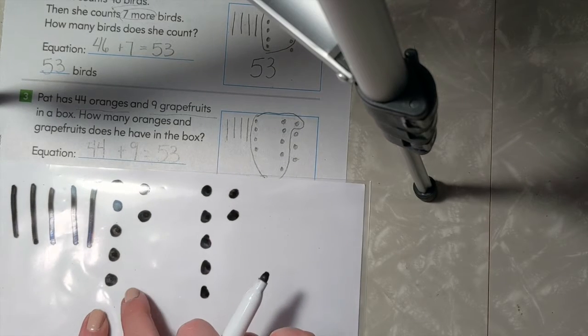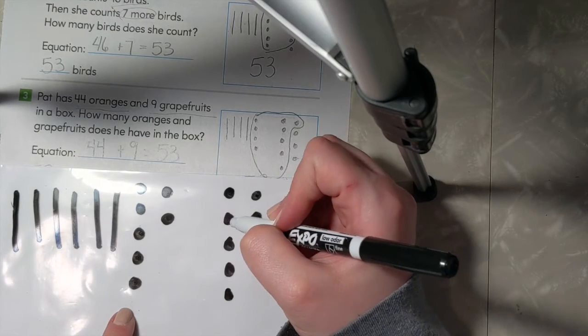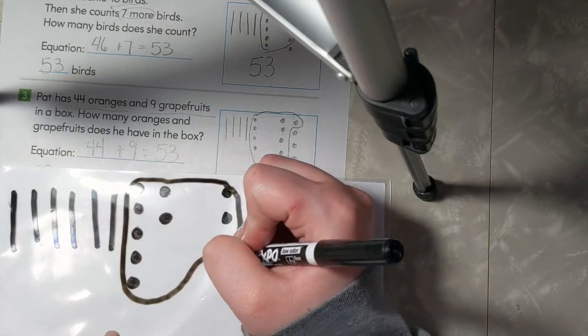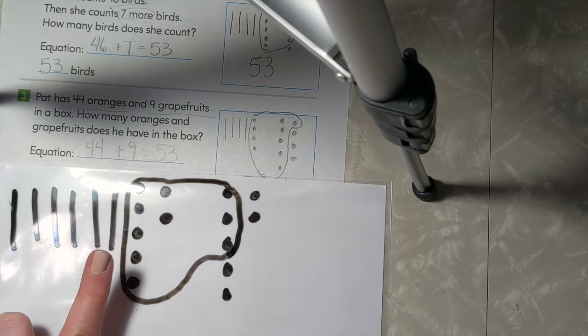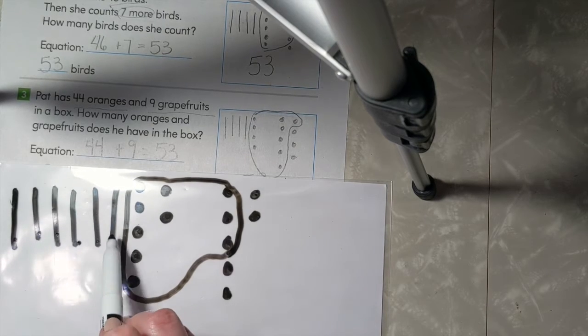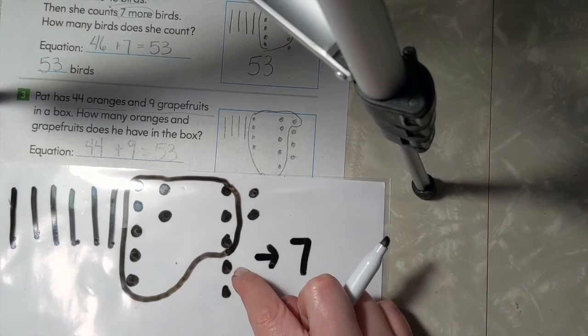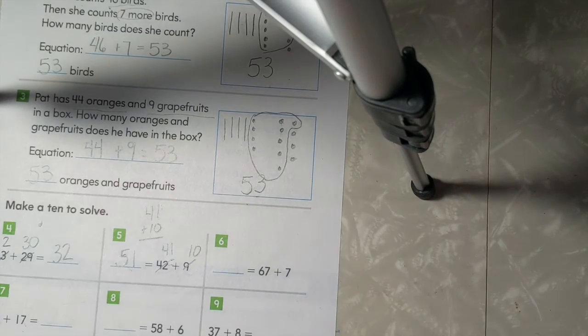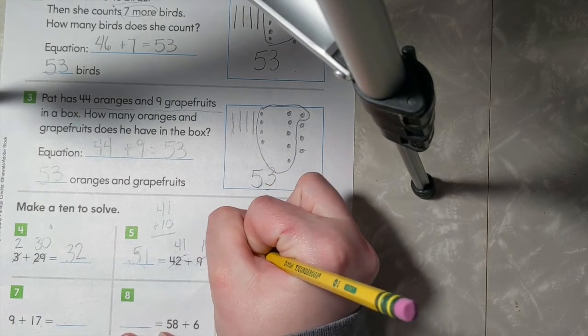Again, we'll count on to make a group of 10. So I have 7, 8, 9, 10. So now I have 10, 20, 30, 40, 50, hold on. I counted that wrong. 10, 20, 30, 40, 50, 60, 70. I have 70, and 1, 2, 3, 4 to make 74. So 67 plus 7 equals 74.